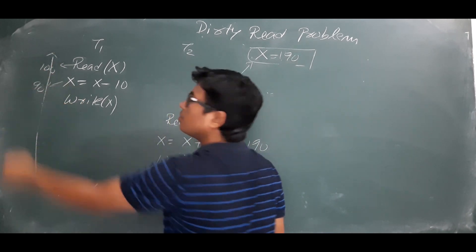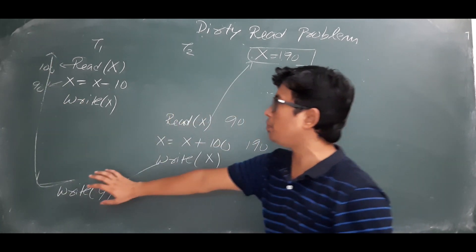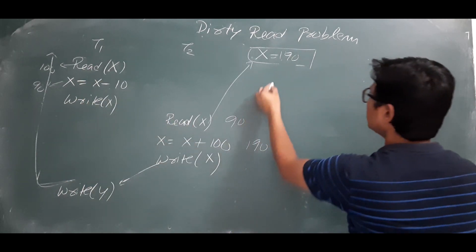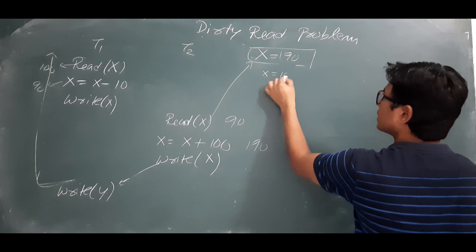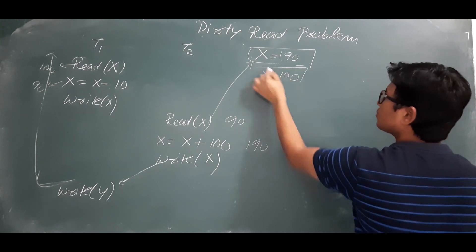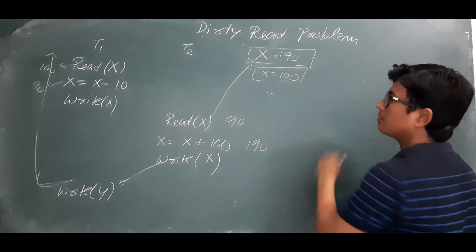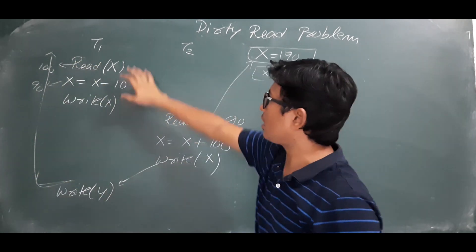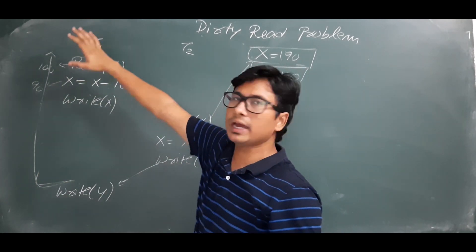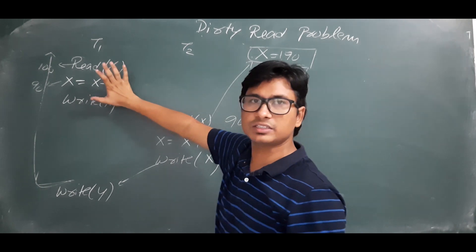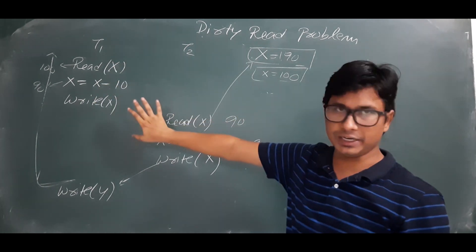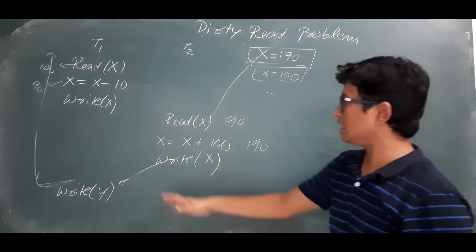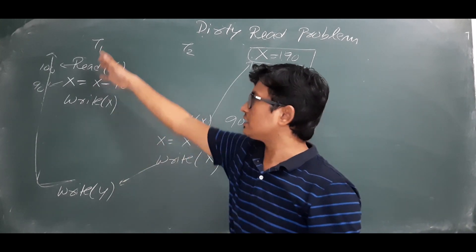So T1 will perform a rollback. When it does the rollback, it will restore x to 100, because it had originally read x as 100. So according to this transaction after rollback, whatever modifications T1 had done will not be updated in the final result.